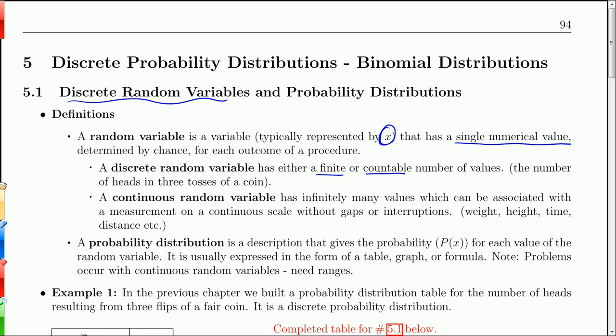A continuous random variable has outcomes on a continuous scale. These are things like weights, heights, time, distance, or inches of rain, centimeters of rain, things like that.